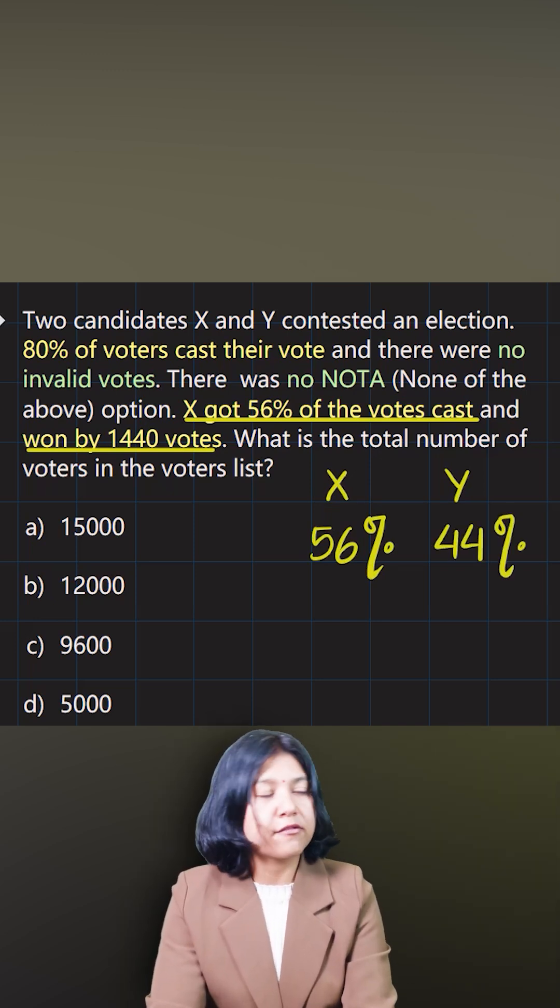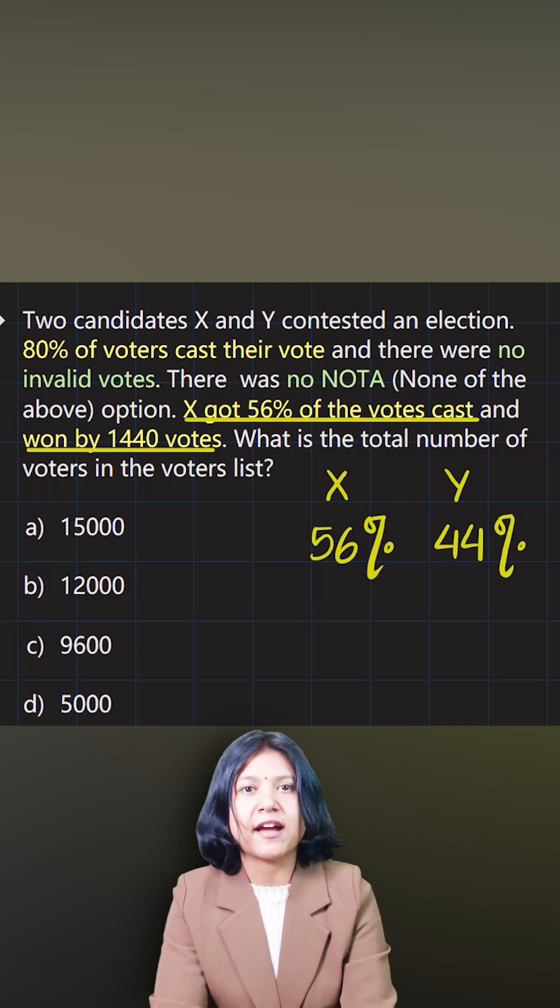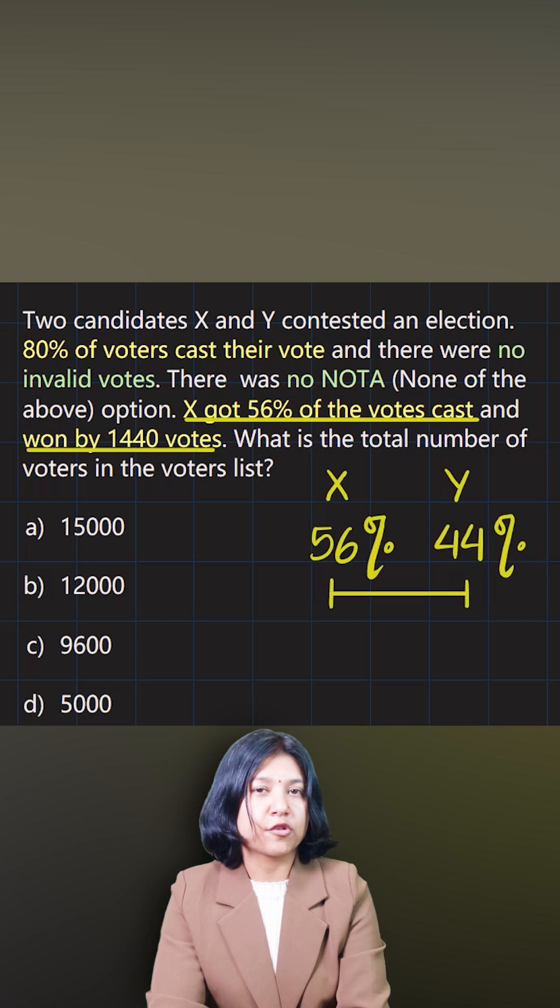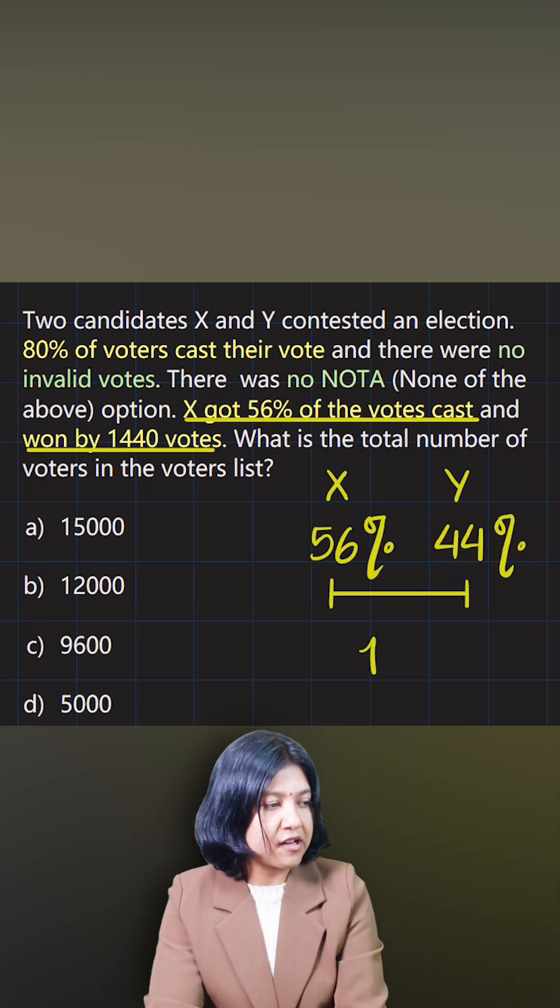Now, X won by 1440 votes - that value represents the difference. I want to find the difference in percentage. 56 and 44, their difference is 12%. So I know that this 12% equals the given number of votes, which is 1440.